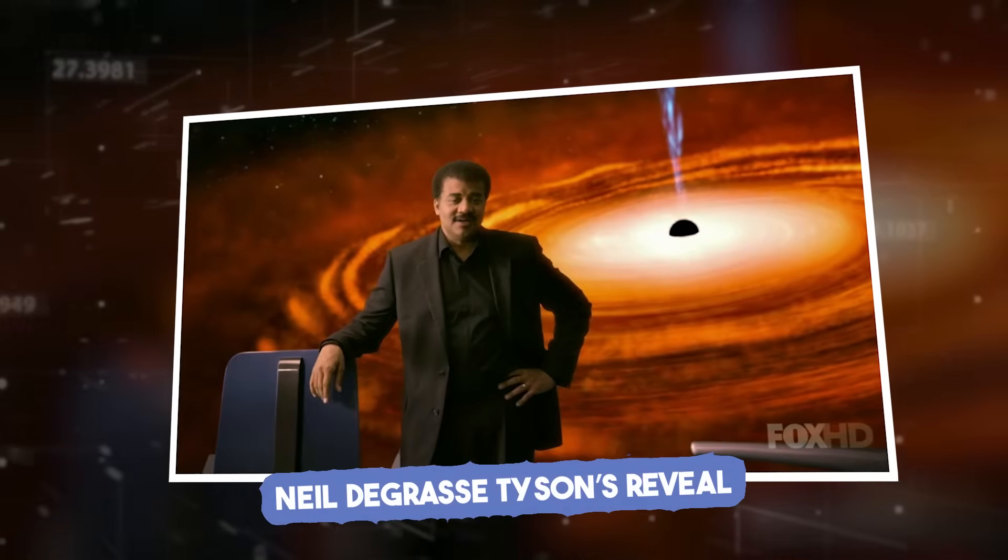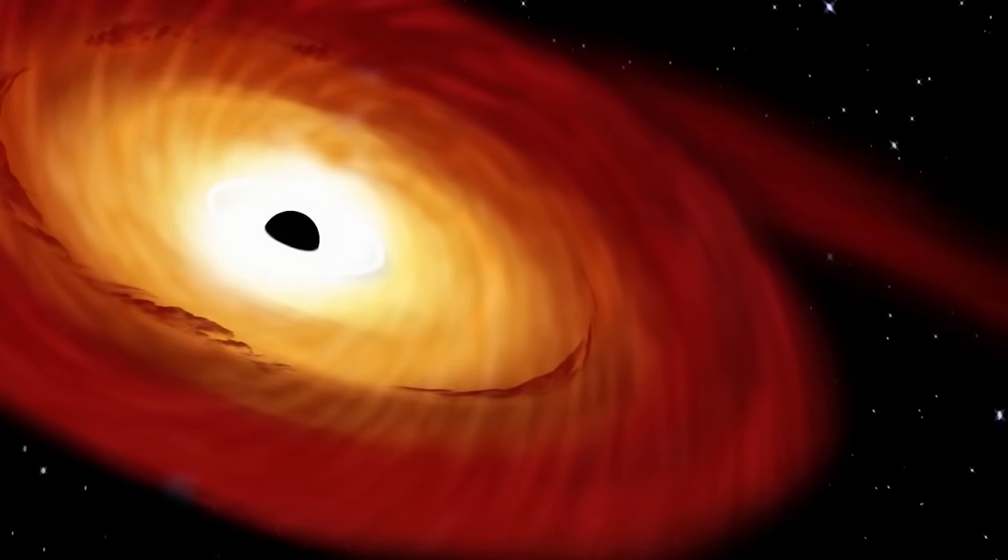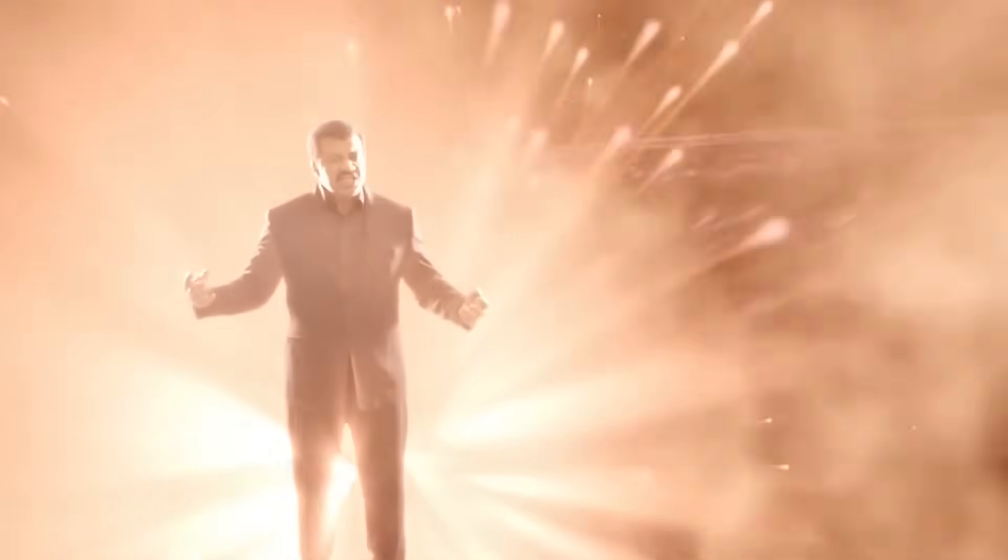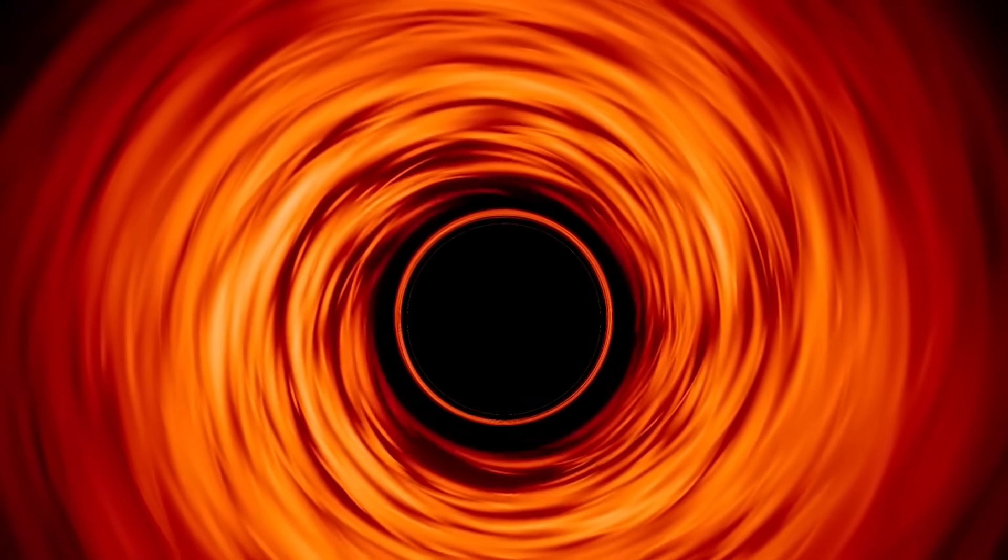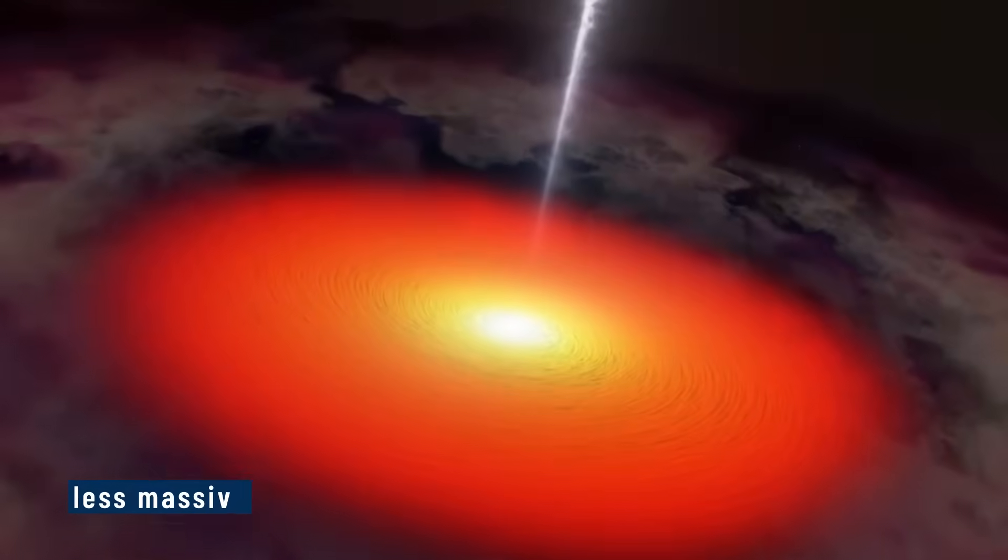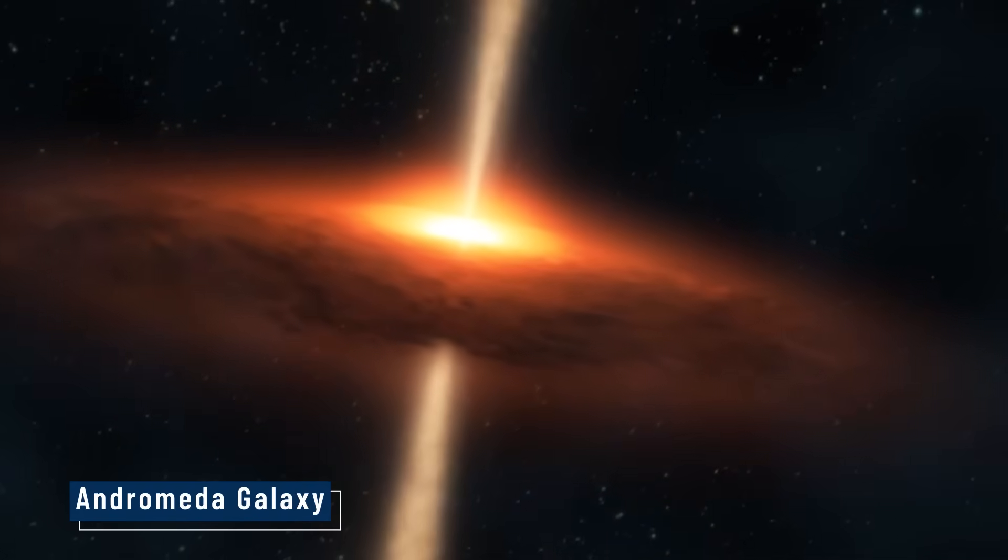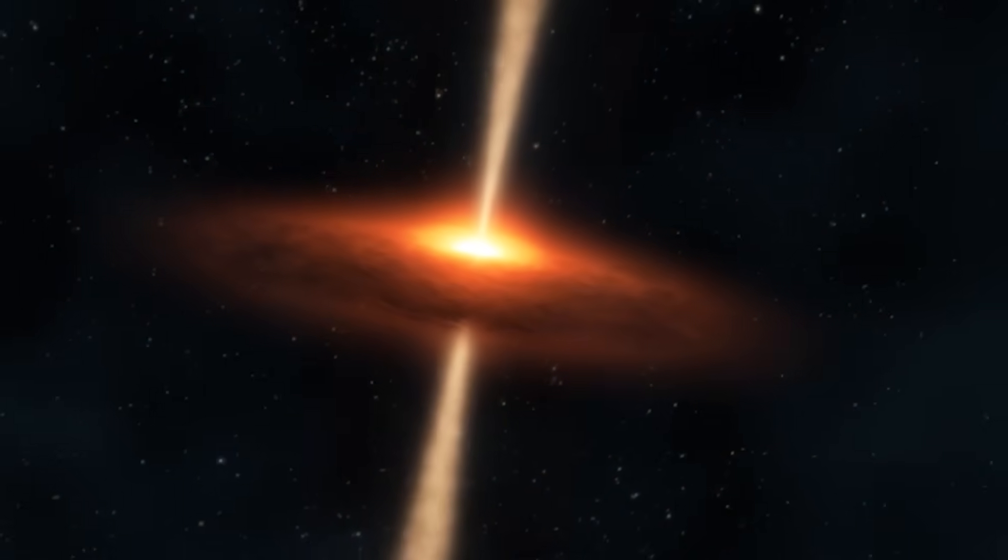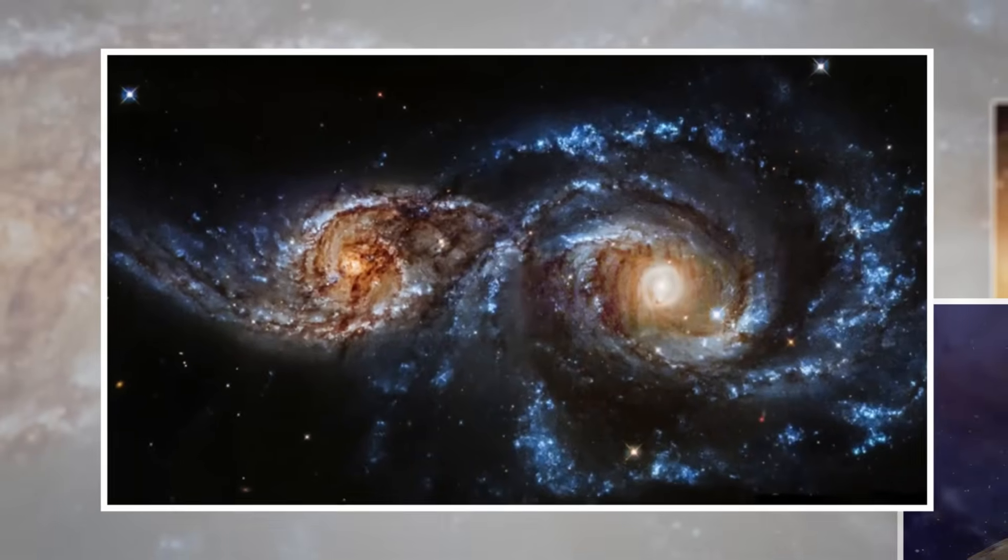Neil deGrasse Tyson's reveal. When Neil deGrasse Tyson talks, people listen, especially when he drops cosmic surprises. One of his most interesting revelations was this: The black hole at the center of the Milky Way is less massive than the one in the nearby Andromeda galaxy. It may sound like a small detail, but it changes how we think about our place in the universe.